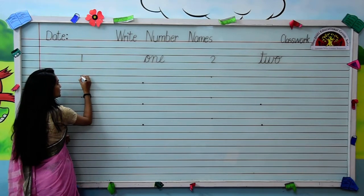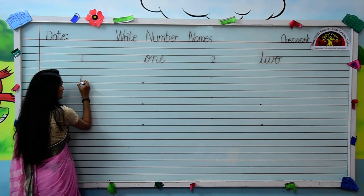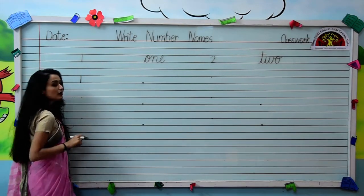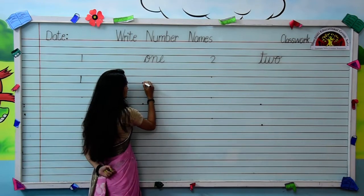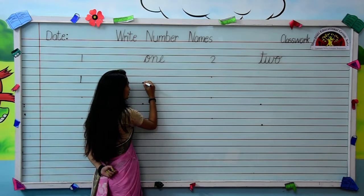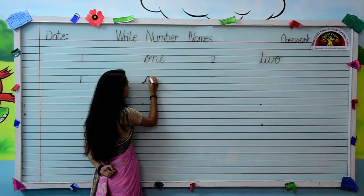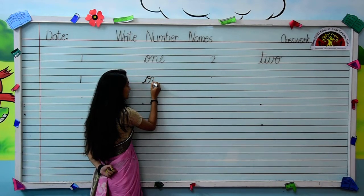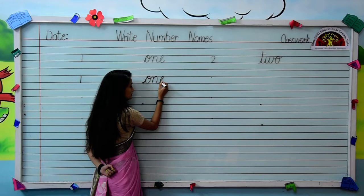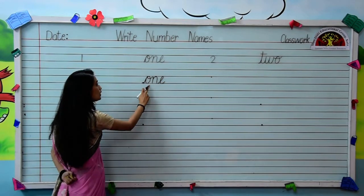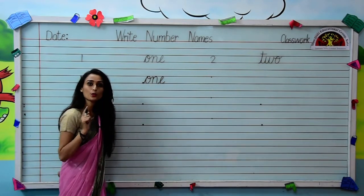Firstly, write numeral 1. Make a standing line like this — this is number 1. Now we will write the spelling of number 1: O-N-E. Write O, small cursive letter O. Then, joining with letter O, write N. And from the end point of letter N, write E. O-N-E like this.